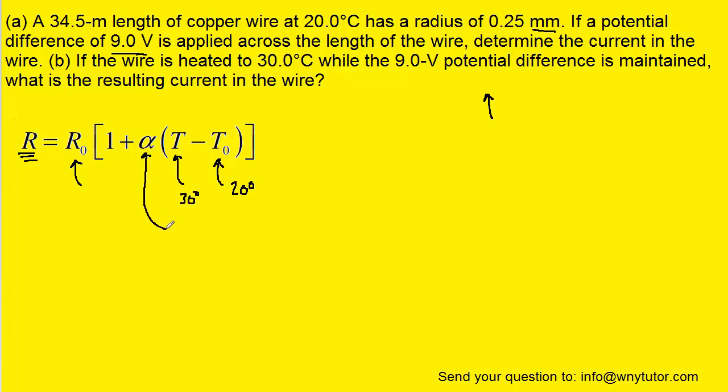And then alpha is a coefficient of resistivity, which for copper has a value of 3.9 times 10 to the minus 3 inverse degrees Celsius. That's a value, again, that you could look up at 20 degrees Celsius. So with those values, we can plug in to calculate the new resistance.